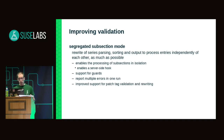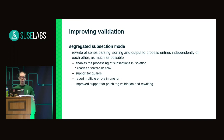Other benefits coming with individual-entry processing include support for guards in the sorted section — currently not supported, but needed for example by Mike Galbraith for the RT branch. It also allows reporting multiple errors at once rather than stopping at the first one, and will improve the robustness of patch tag validation and rewriting — in some cases we can detect that a patch's subsection doesn't correspond with its git-repo tag and fix it automatically.